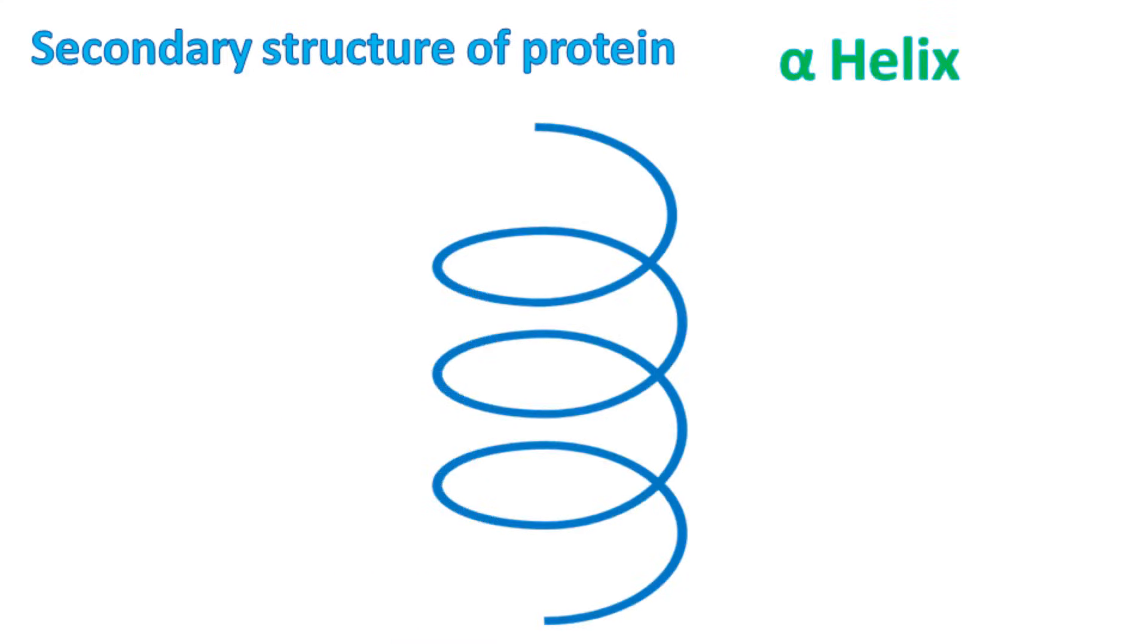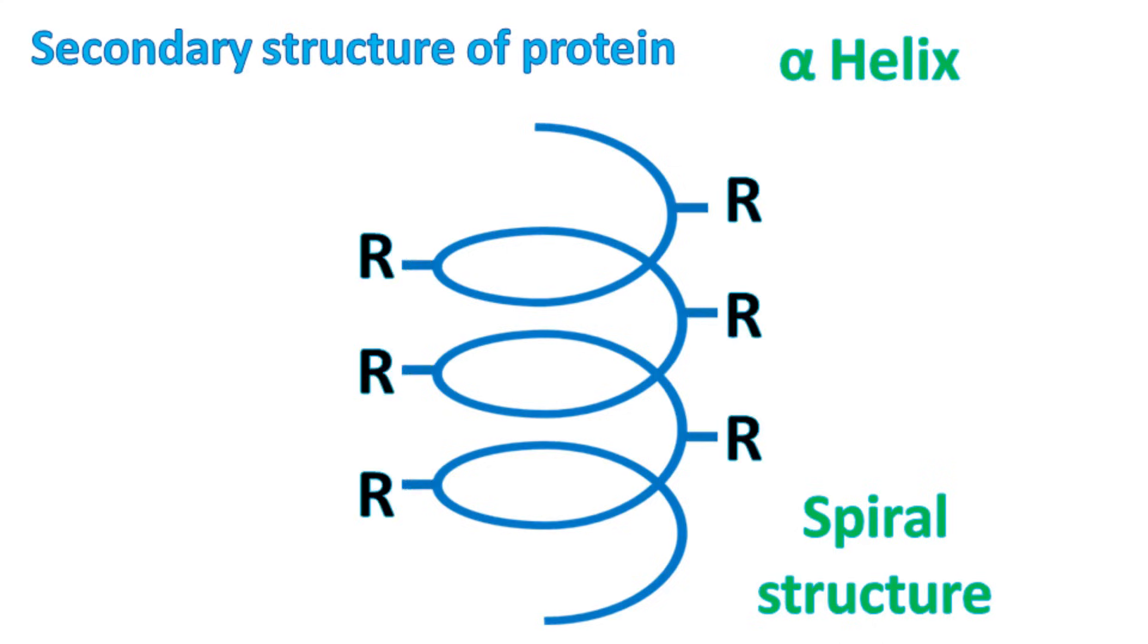Let's talk about alpha helix. Alpha helix is the most common secondary structure of protein. In this structure, the protein attains a spiral shape such that the side chain of amino acid remains outwards.